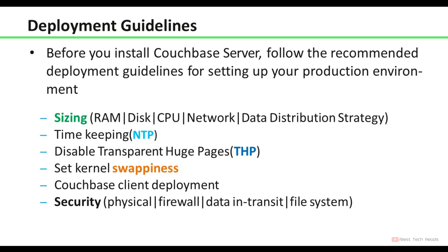Deployment guidelines: before you install Couchbase Server, follow the recommended deployment guidelines for setting up your production environment. Make sure you are wiring the cluster properly to avoid issues in the future. Make sure time is synchronized on all servers — it is recommended to use the NTP protocol to avoid issues with XDCR and your applications. Disable Transparent Huge Pages (THP) and set kernel swappiness as per the recommendation. Security should be applied at the physical level, firewall level, data in transit, and file system level. Always block unused ports — open only those ports that are required. You can enable SSL for inter-node communication as well as cross data center replication.